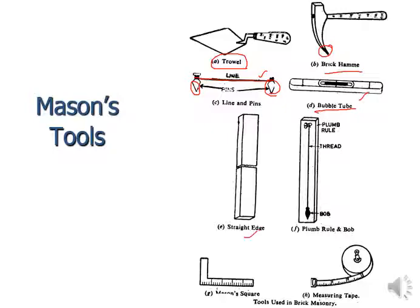The straight edge is used for vertical alignment. The plumb rule and bob ensure vertical alignment of the wall. The mason's square ensures corners are aligned at 90 degrees and for other measurements requiring 90-degree alignment. The steel tape is used to measure different dimensions.